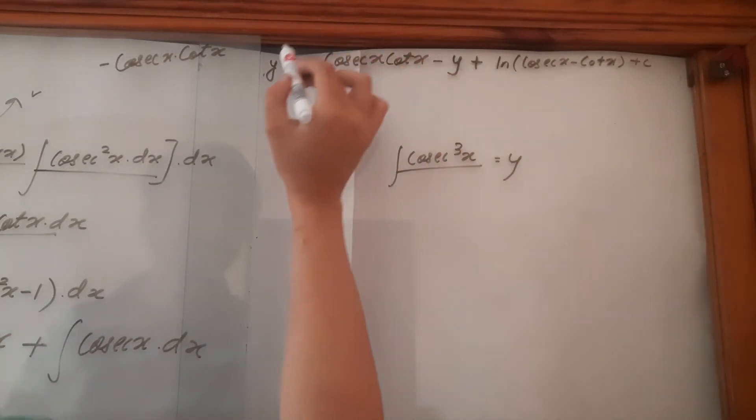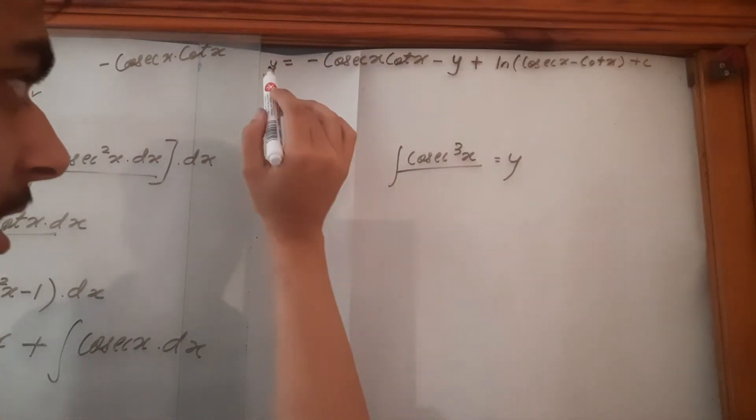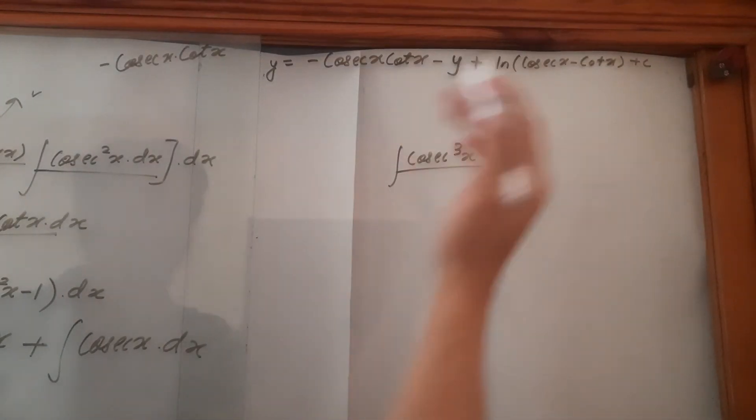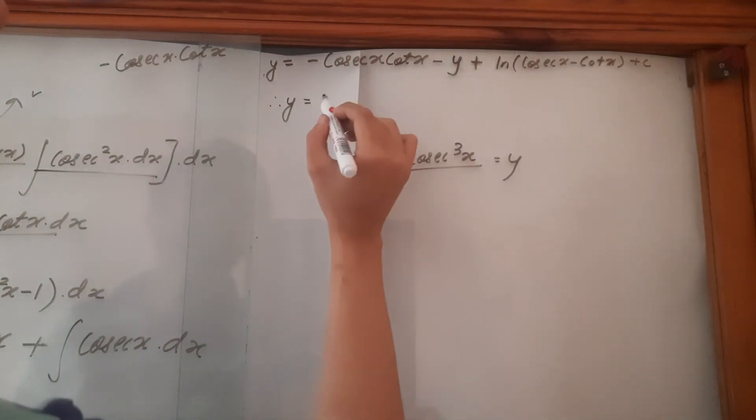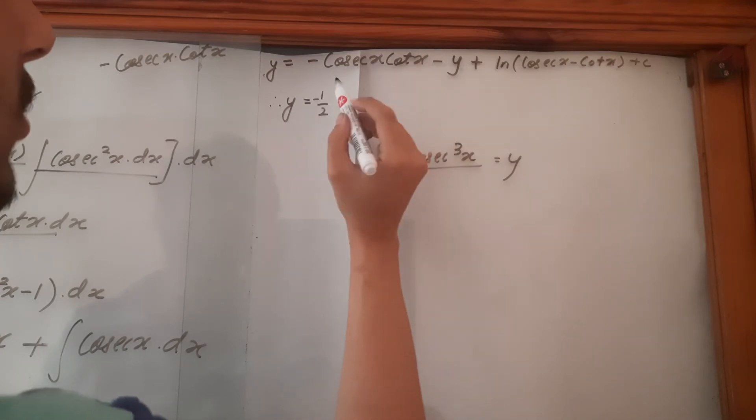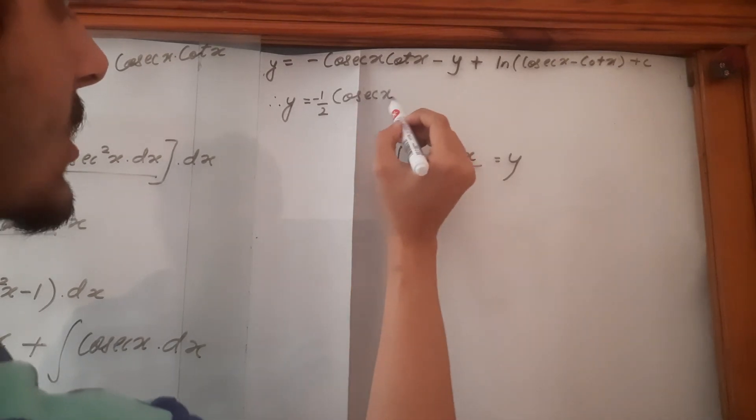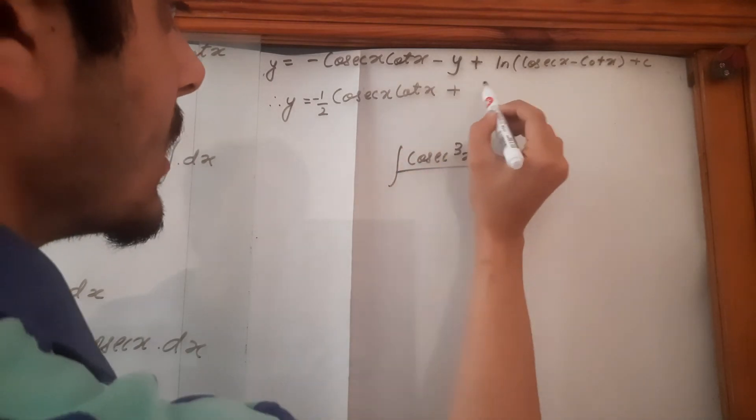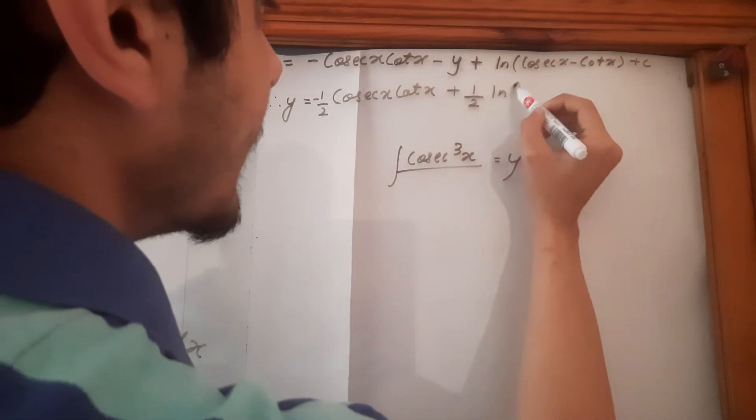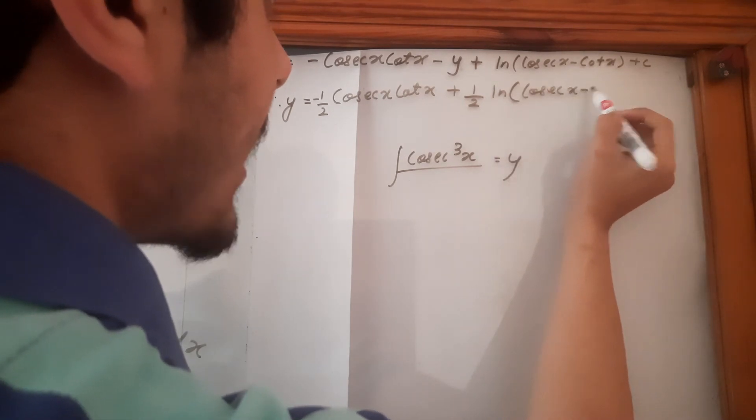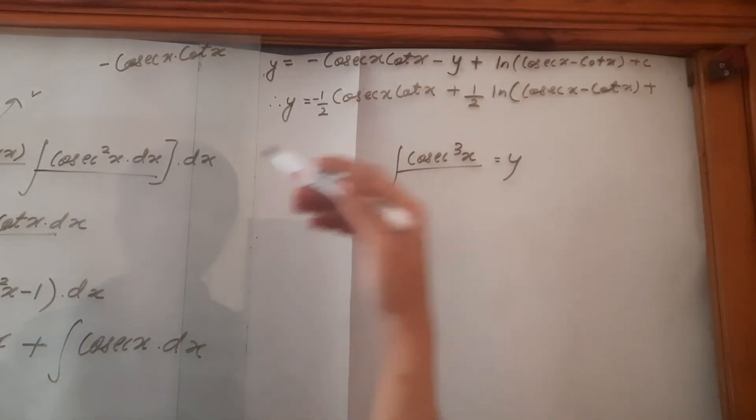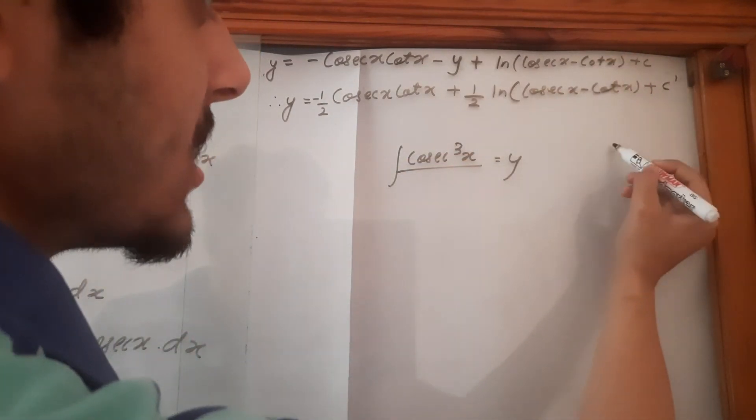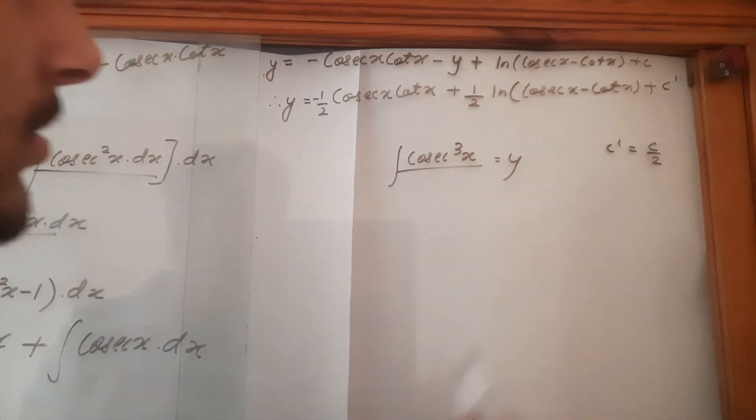So if this y goes over here, then it's going to be two y. And then the two is going to divide whatever is there in the right hand side. So therefore, y, the thing that we are solving for is equal to one upon two or let's say minus one upon two cosec x cot x plus one upon two ln cosec x minus cot x plus, this is an integration constant. So you don't have to necessarily divide two for this one, but then let's say c prime. So c prime is equal to c upon two.